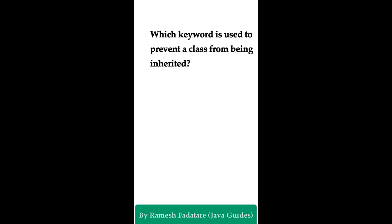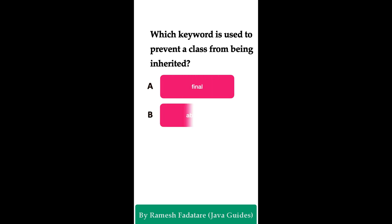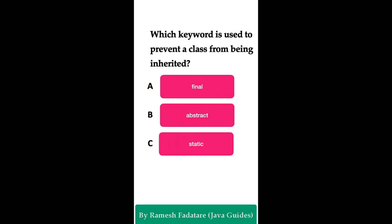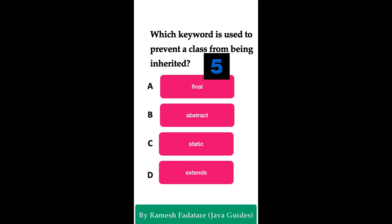Welcome to Java Quiz Series. Here is one more question: Which keyword is used to prevent a class from being inherited? Option A: final keyword. Option B: abstract keyword. Option C: static keyword. Option D: extends keyword. You have five seconds to answer.